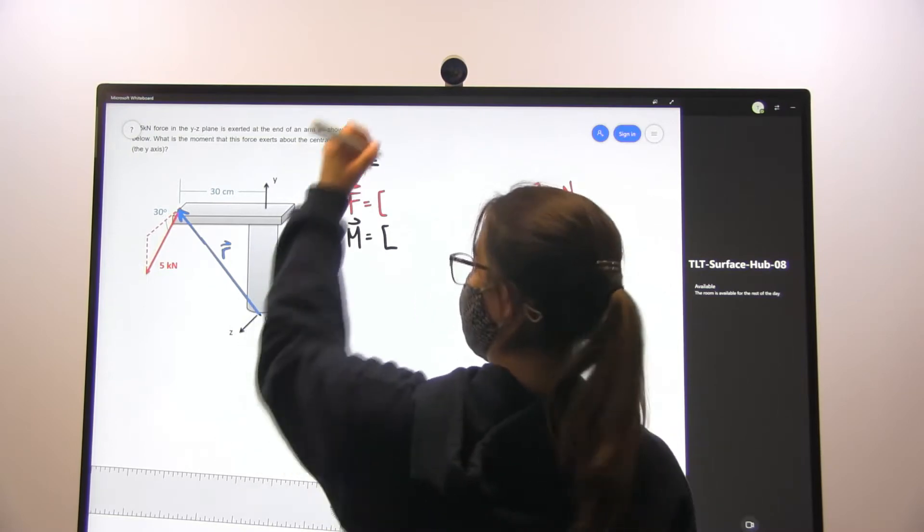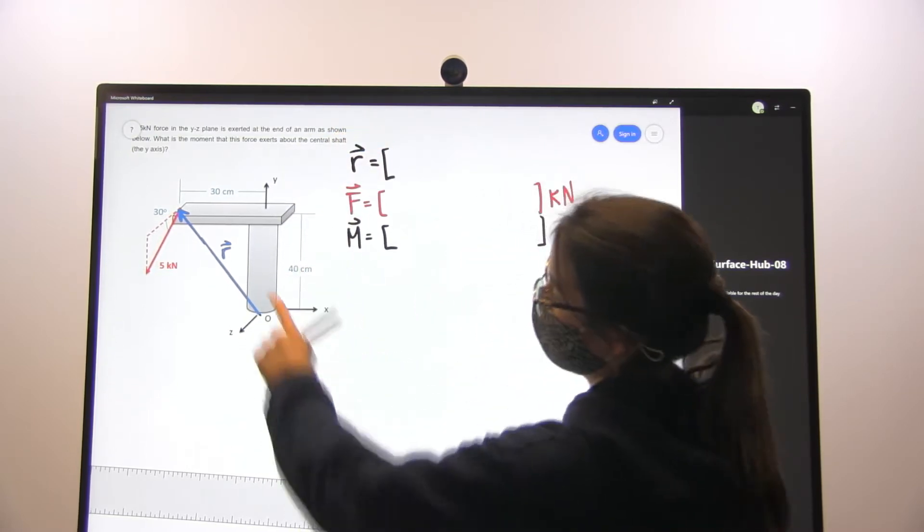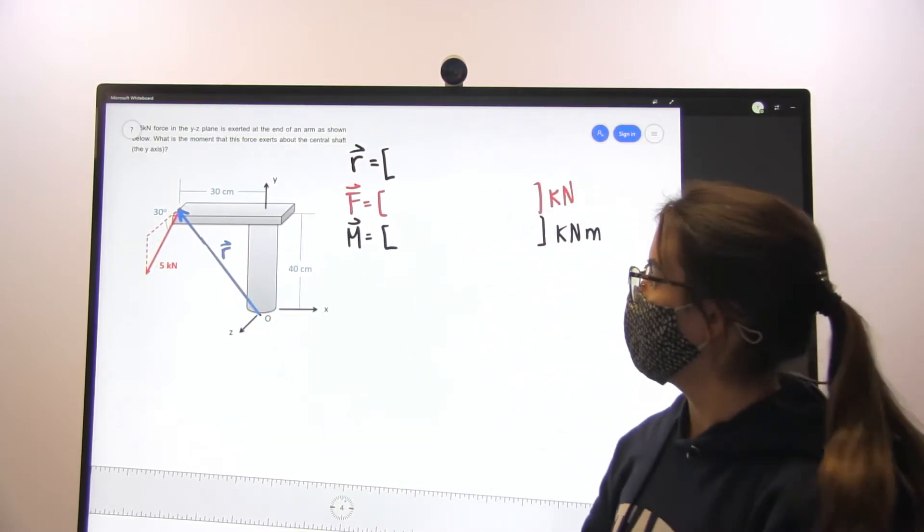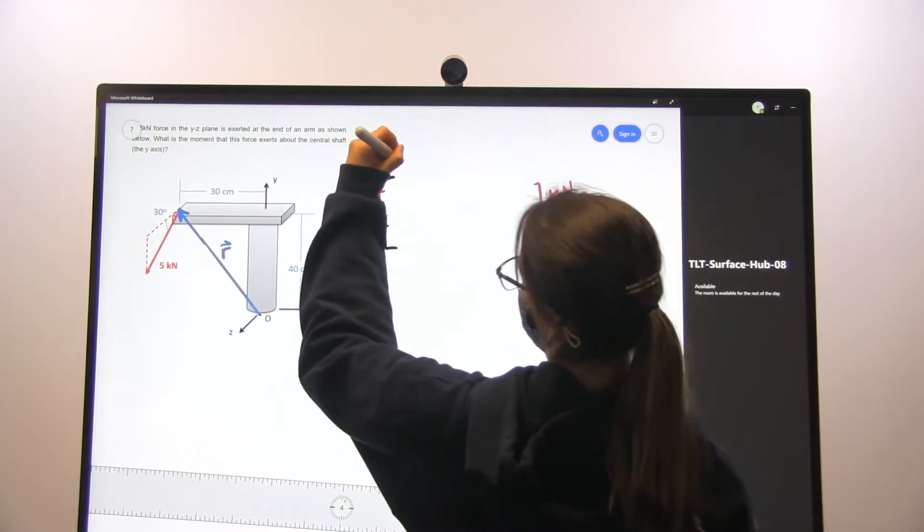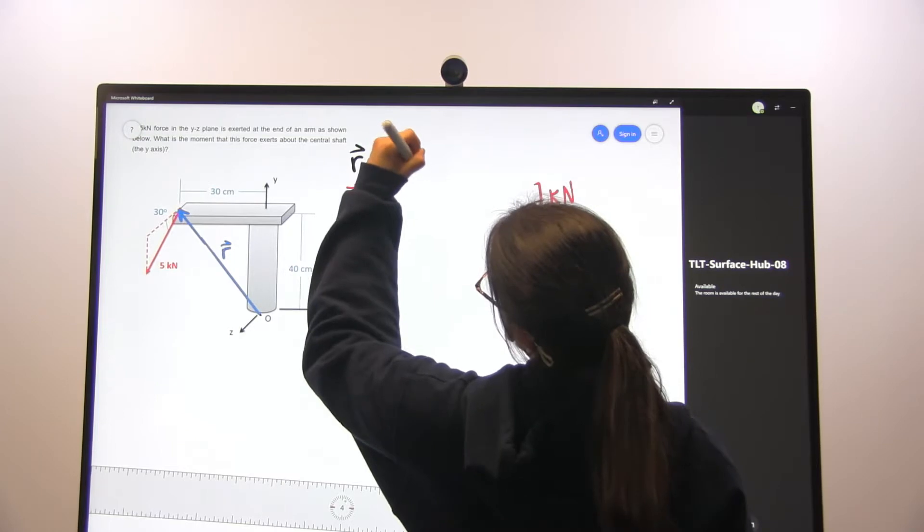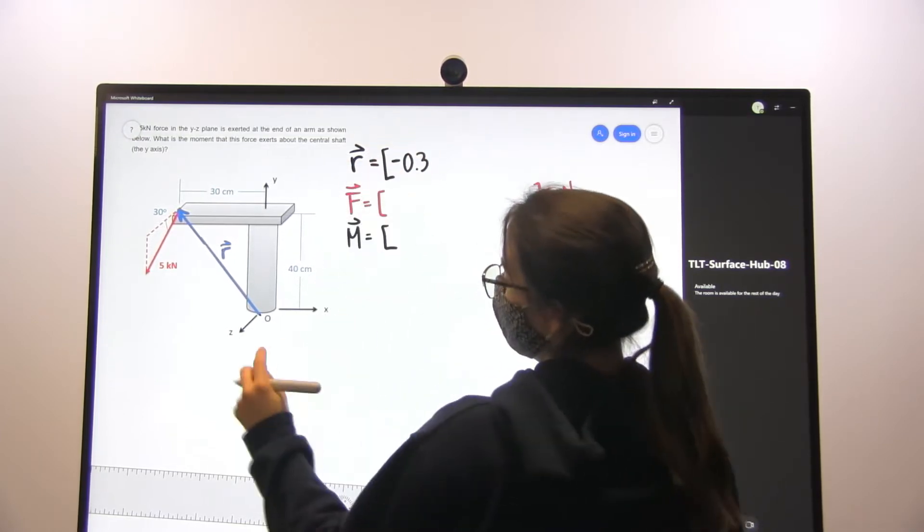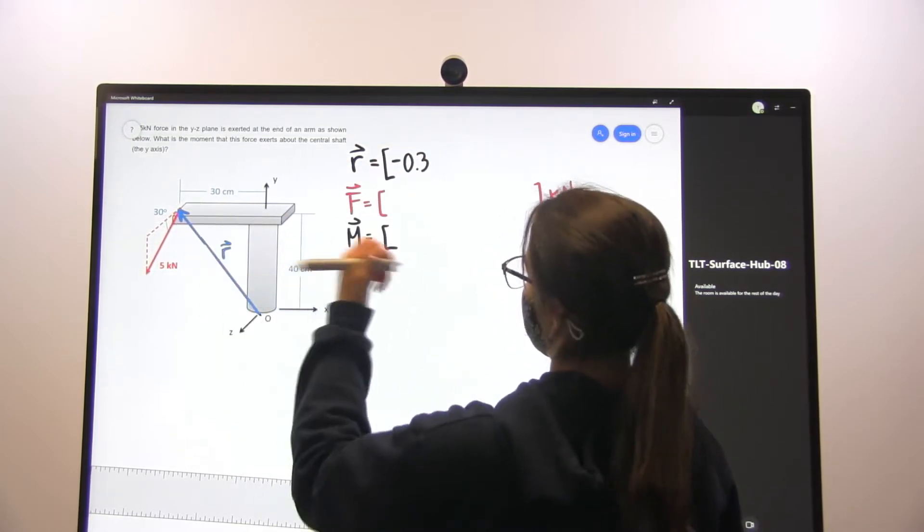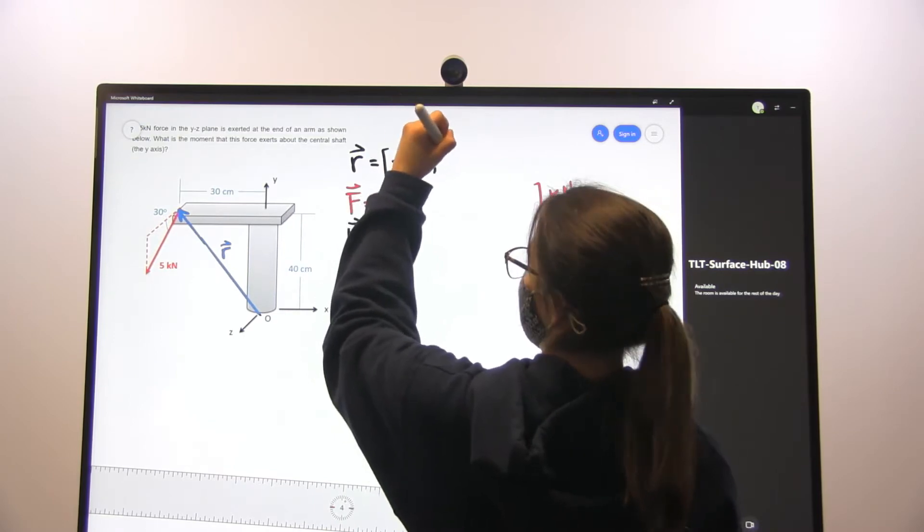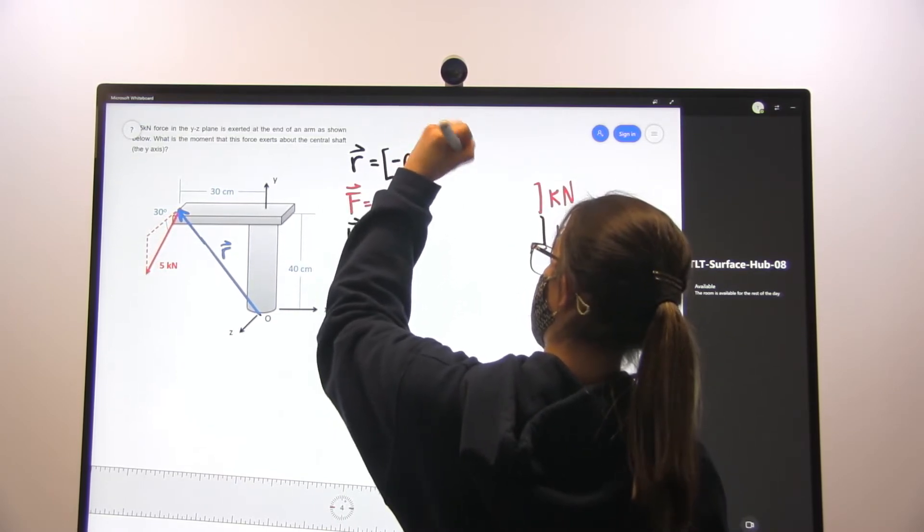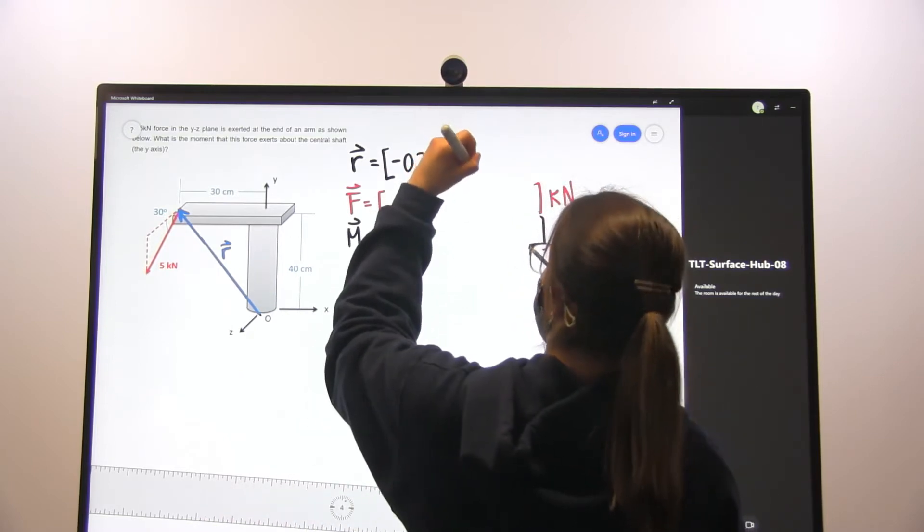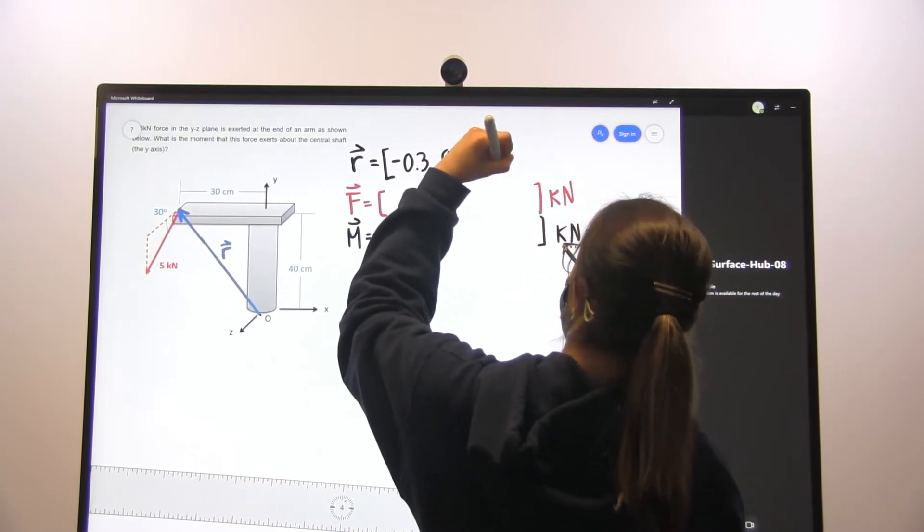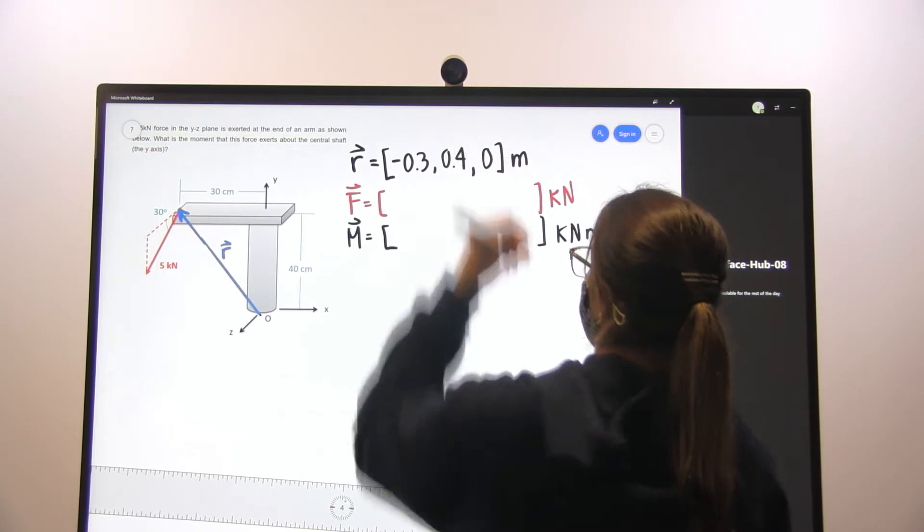The first thing that we want to do is define our r-vector. Looking again at our coordinate system, our r-vector in meters is going to be negative 0.3 in the x-direction, followed by 0.4 meters in the y-direction, or 40 centimeters, and 0 in the z-direction in meters.